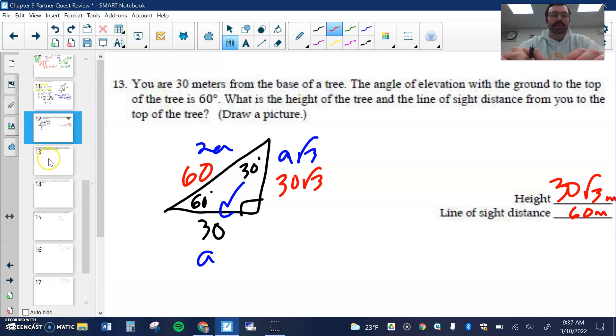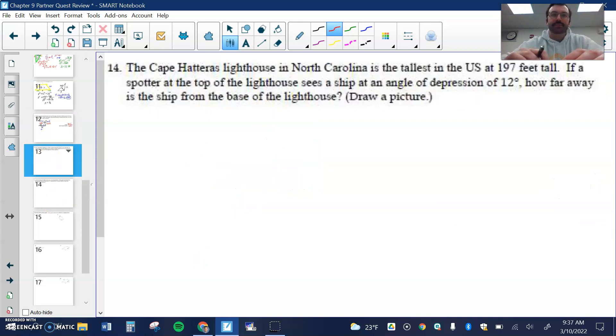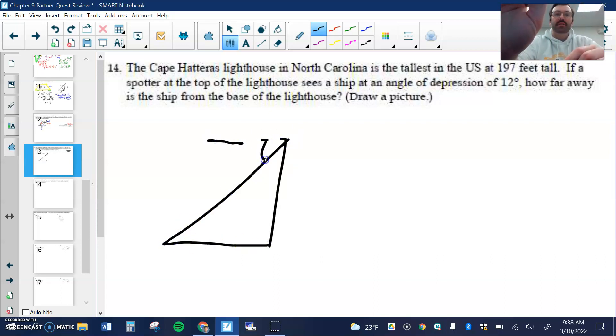The Cape Hatteras lighthouse in North Carolina is 197 feet tall. A spotter at the top of the lighthouse sees a ship with an angle of depression of 12 degrees. How far from the base? The angle of depression is technically this angle here, but that's also going to be the same as this angle here. There's 197 feet tall. It's not a special right triangle, which means I'm going to have to use trig.